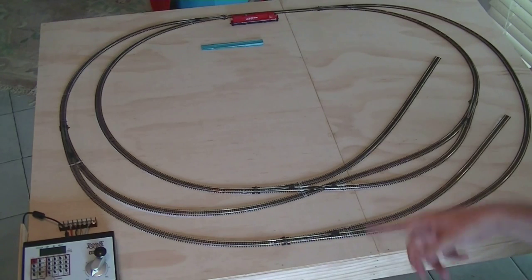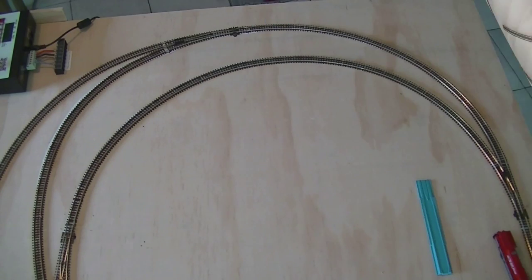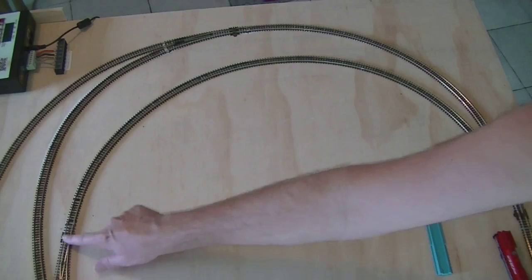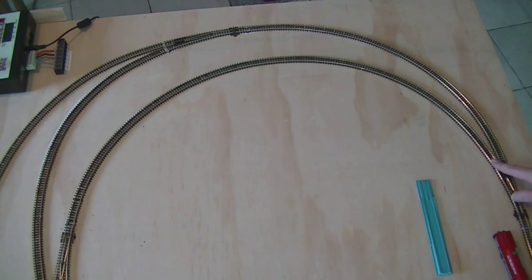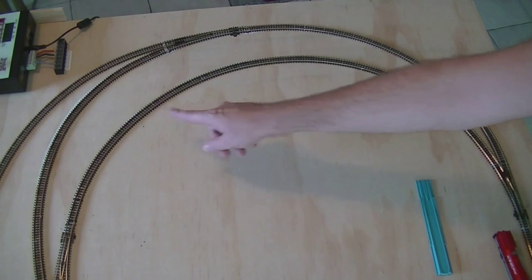Okay guys, so the track is laid down now and it's time to get started on the track feeders. So let's get started. Alright, so we have one turnout here, then we have another turnout over here, and I've got a single piece of flex track going from turnout to turnout. So this length of track here will be two block sections.